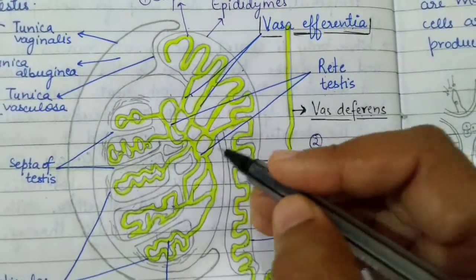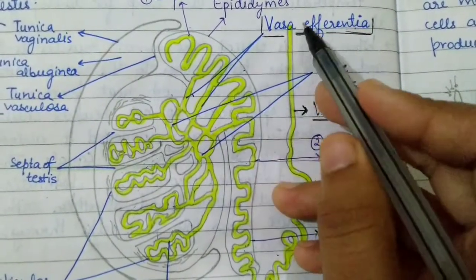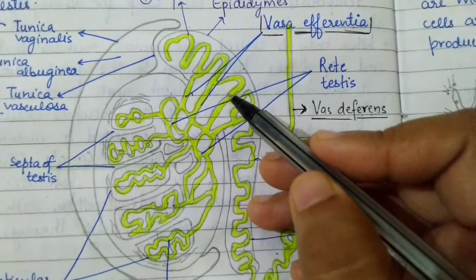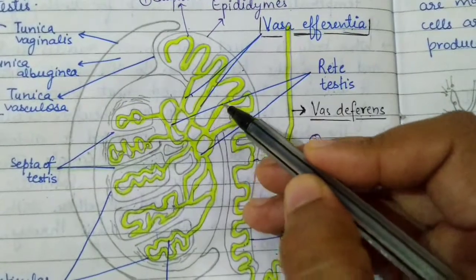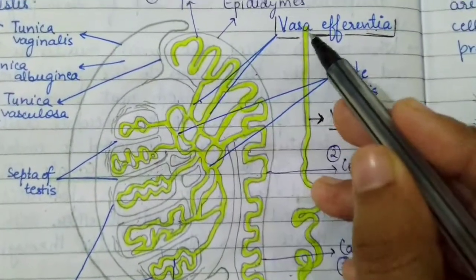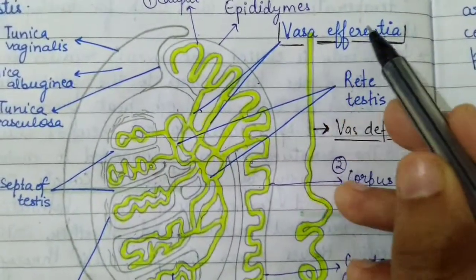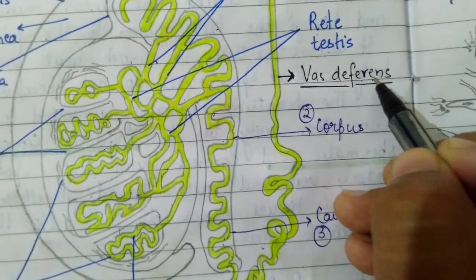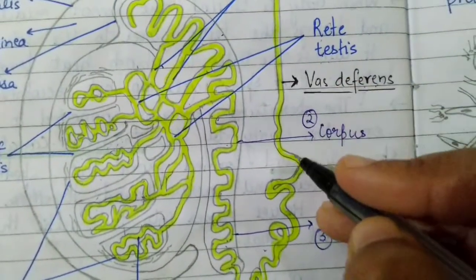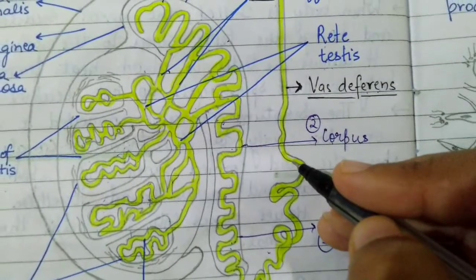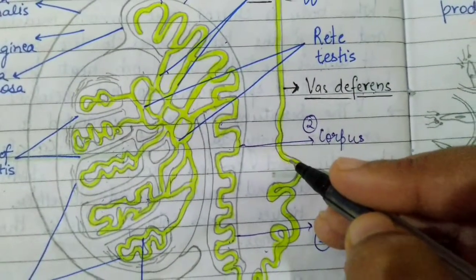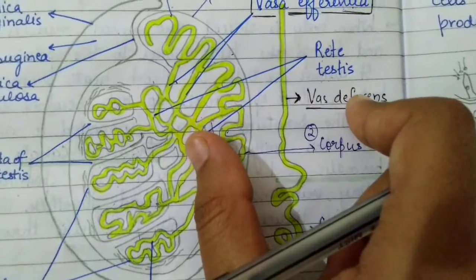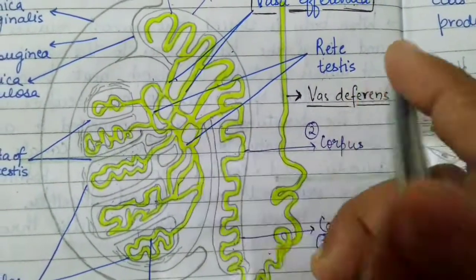The fourth difference concerns the inner lining. Vasa efferentia bear many ciliated cells in their inner lining, whereas vasa differentia have stereocilia present in their inner lining.